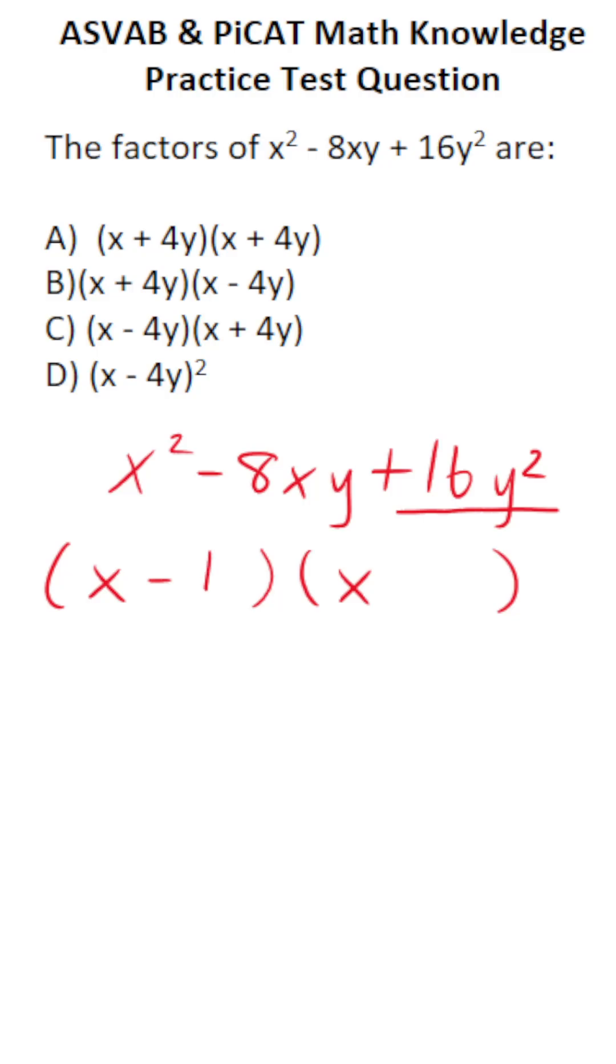So that's going to be negative 4y and negative 4y. Again, negative 4y times negative 4y, and negative times negative is positive. That's positive 16y squared.